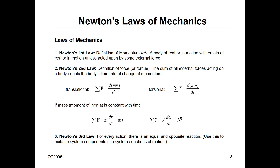Newton's first law is the definition of momentum: a body at rest or in motion will remain at rest or in motion unless there is an external force acting on it. Newton's second law, which we'll use heavily to derive the equation of motion: the rate of change of momentum equals the total forces acting on a body, or mass times acceleration equals the summation of forces. Using this equation, you derive the equation of motion of any mechanical system.